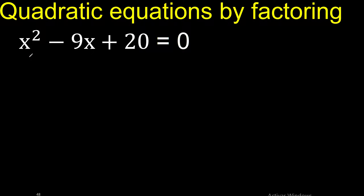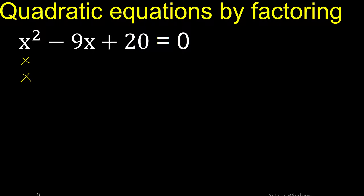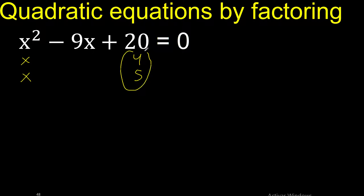x multiplied by x is x squared. We need 2 numbers that multiply to 20 — 10 multiplied by 2 is 20, or 4 multiplied by 5 is 20.